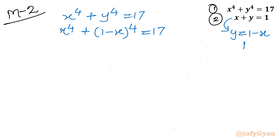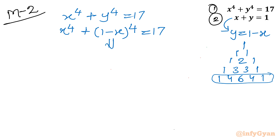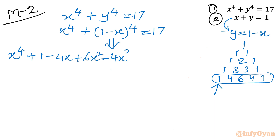Since the power is 4, we can expand (1 − x)⁴ using Pascal's triangle. The row for power 4 gives coefficients 1, 4, 6, 4, 1. With alternating plus-minus signs as x increases in power, the expansion is: 1 − 4x + 6x² − 4x³ + x⁴.